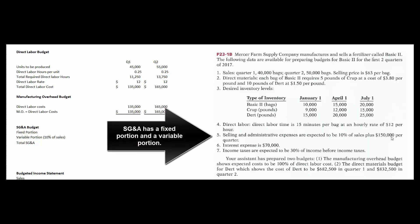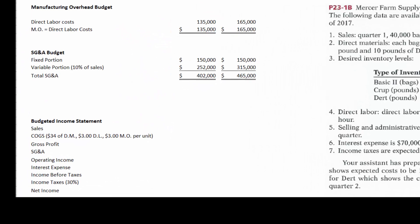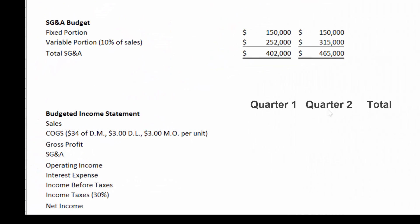Now let's look at the SG&A budget. There is a fixed portion of $150,000 and a variable portion of 10% of sales — maybe that's sales commissions. We tell Excel to take 10% of the sales in quarter one and quarter two. Adding the fixed and variable portions, we get total selling, general, and administrative expenses of $402,000 for quarter one and $465,000 for quarter two.